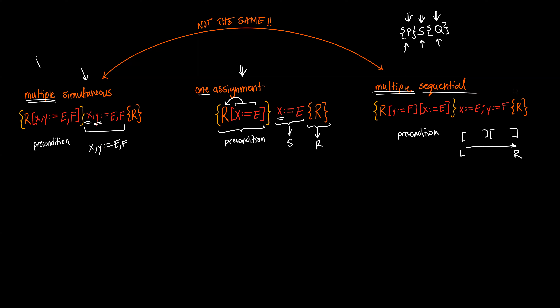For a simultaneous substitution swapping x for e and y for f, the idea is the same as for one assignment: take your program, apply it to the postcondition, and that gives you a valid precondition. So we take our postcondition R and apply the textual substitution given by our program S, performing both substitutions at the same time, and that gives us our precondition.